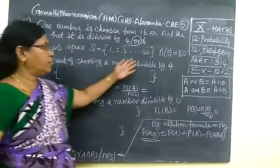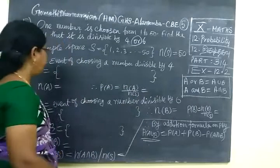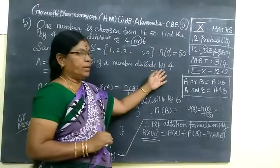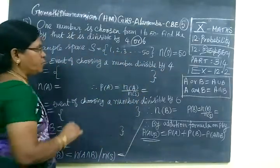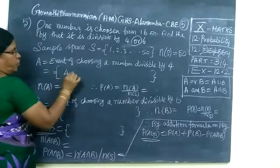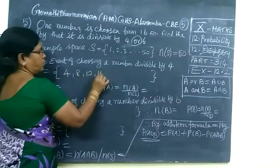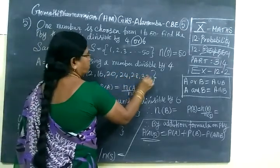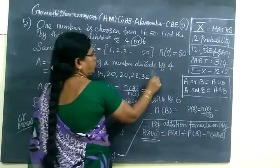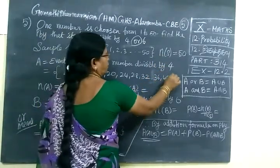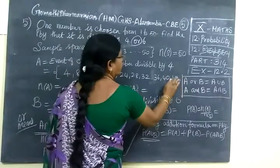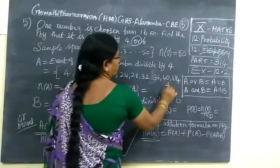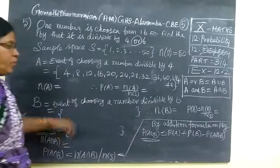It is given N of S is equal to 50. 1, 2, 3, up to 50 means N of S is equal to 50. A equals event of choosing a number divisible by 4. So now you see the numbers divisible by 4: 4, 8, 12, 16, 20, 24, 28, 32, 36, 40, 44, then 48. The last one 48.